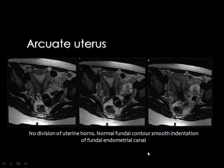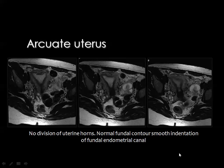This is arcuate uterus with a fundal depression; the endometrial cavity is not divided, and the junctional zone and ovaries can be appreciated on MRI.